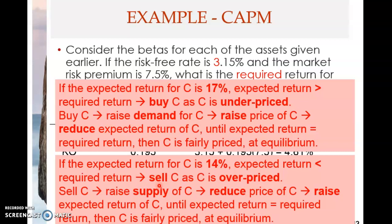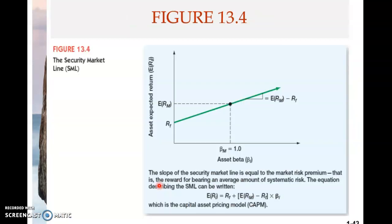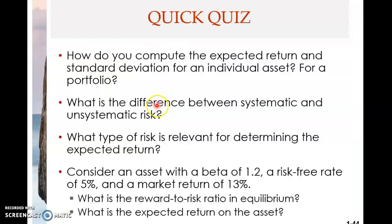This is an important point to understand how the pricing mechanism works — it adjusts until the expected return equals the required return. This diagram shows the Security Market Line, which we have seen earlier. Now we come to the end of this chapter and do a quick review. How do you compute the expected return and standard deviation for an individual asset? This is based on the probability distribution, using a formula for expected return.